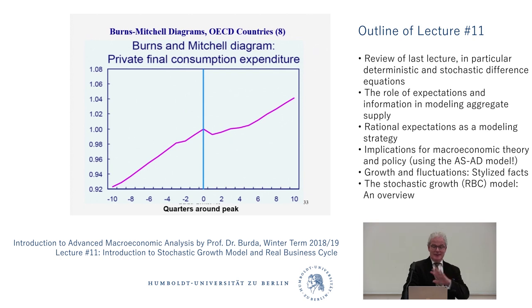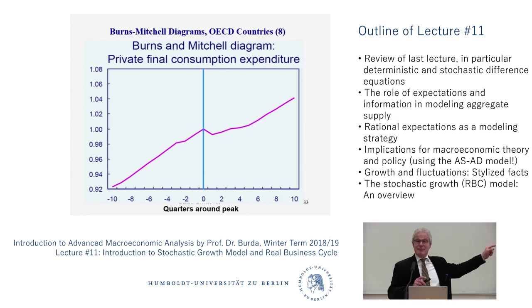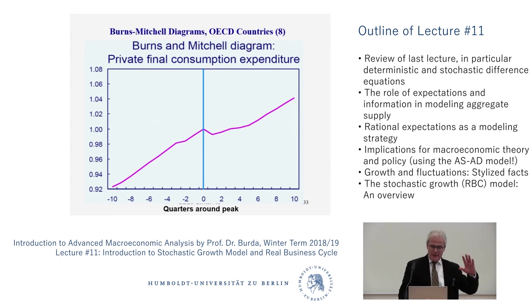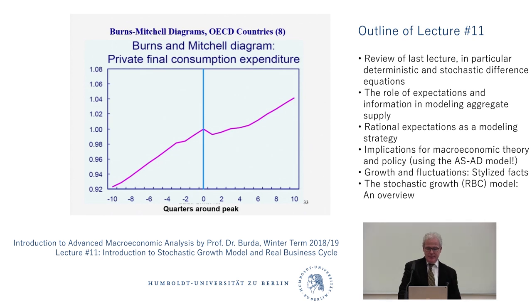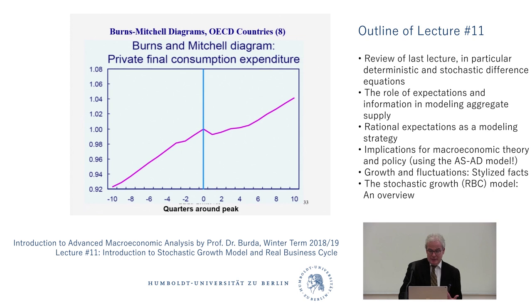Here you see private consumption expenditure over the average cycle — 10 quarters before the peak of the cycle and 10 quarters after. I haven't detrended these data, so you see the trend: after every cycle things get better before the next downturn. There's a sharp decrease at the point when the recession starts and a slow recovery. This is the average behavior over eight countries — and that's kind of what we're interested in from our models, because as Lucas said, business cycles are all alike. They have a lot of similar dominant characteristics.